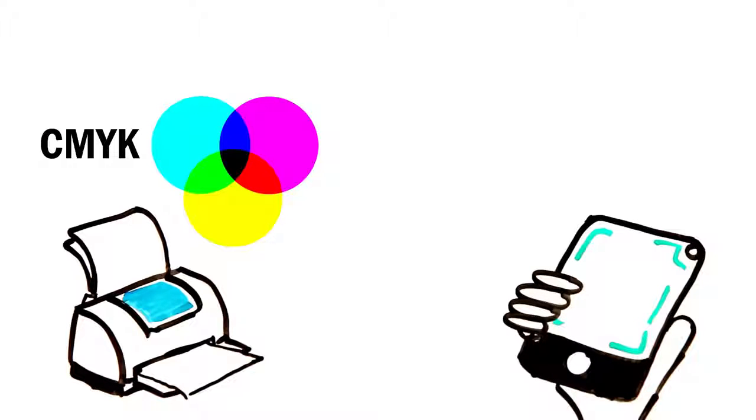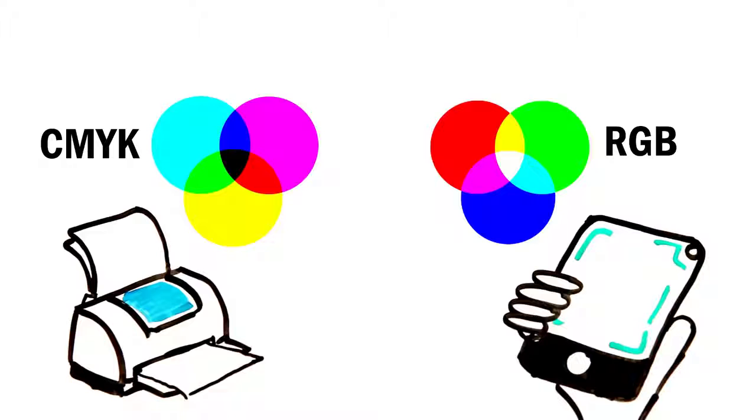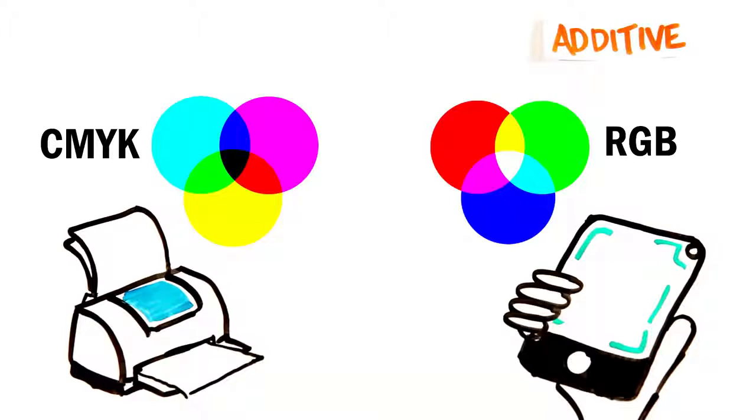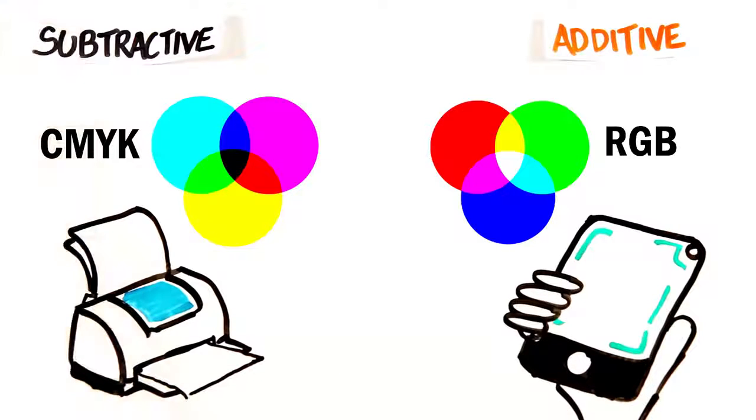Or that the screen you're watching this on uses red, green, and blue. These are different color models, where RGB is additive, meaning the mixing of different lights of color create new colors, while the other two are subtractive models and absorb different wavelengths of light.